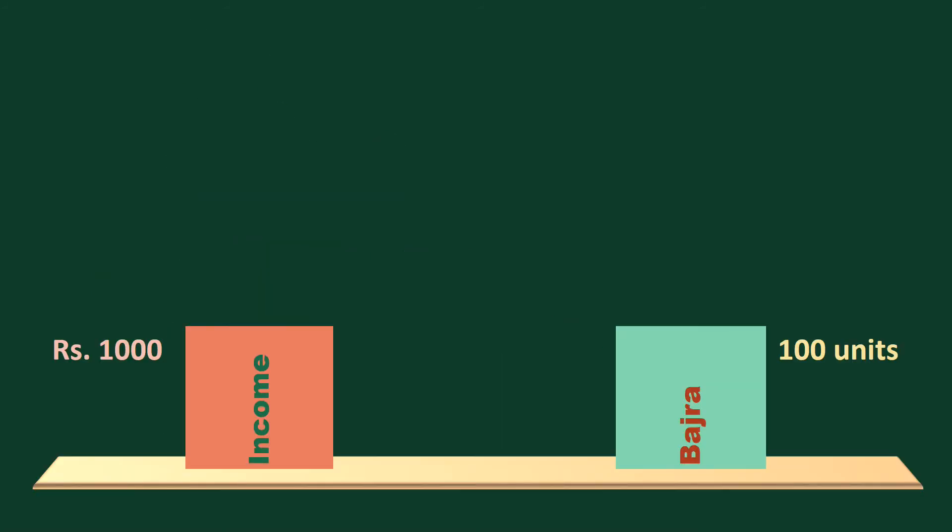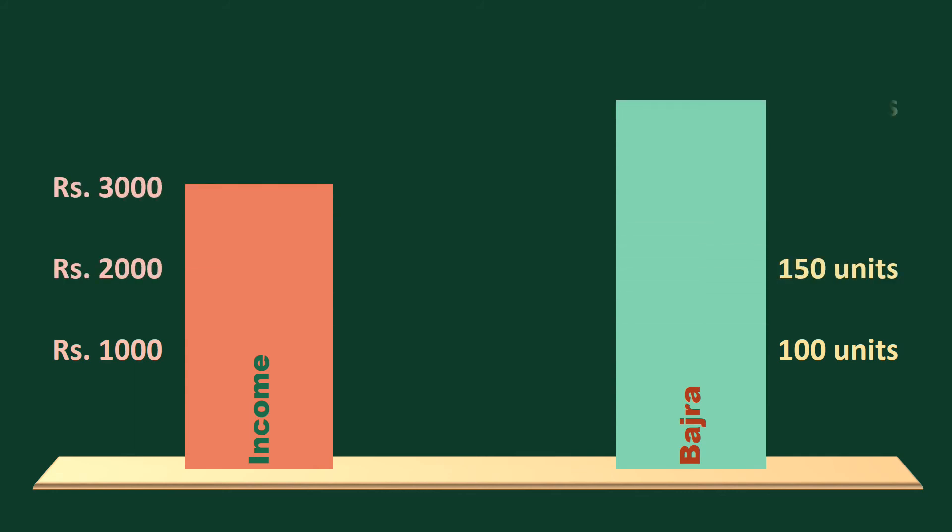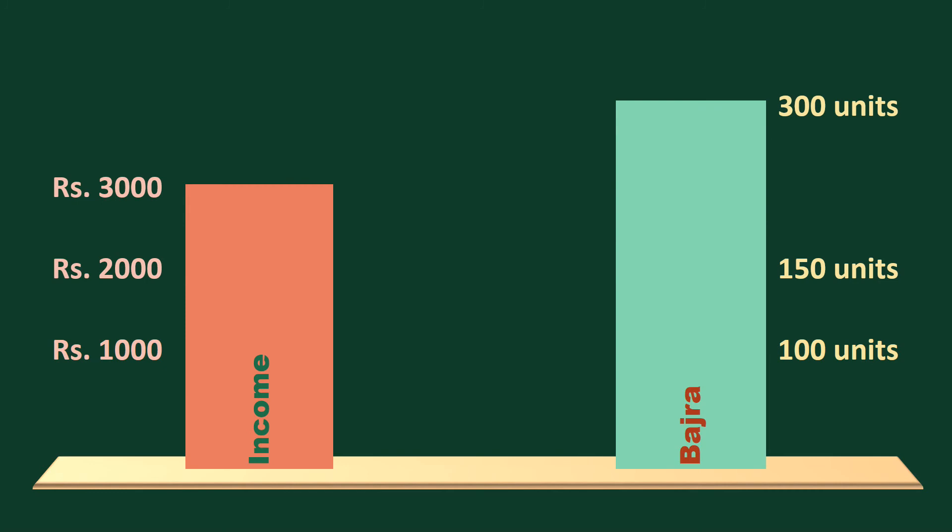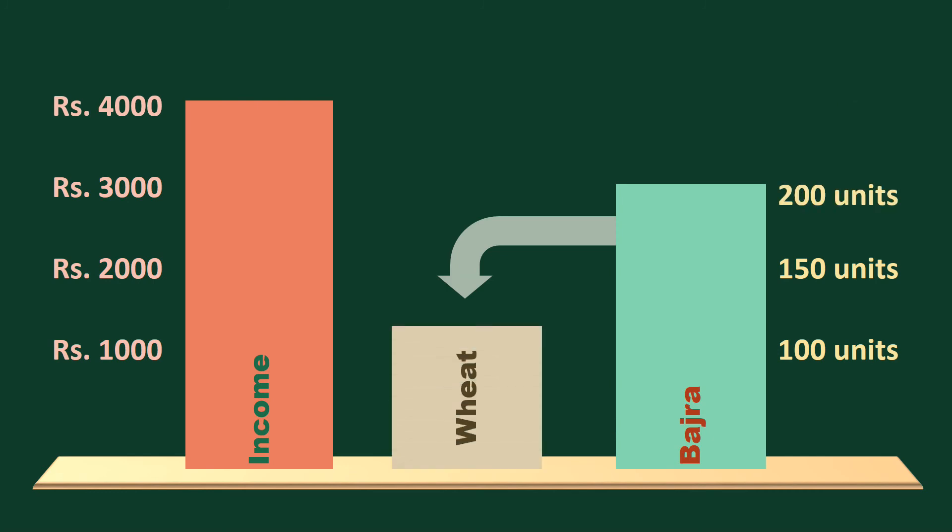Here, I must give an example. At a very low level of income, poor people consume bhajra. In the early stage, they buy more bhajra with every increase in income. But once their income crosses a certain limit, they switch to wheat, which in their view is superior to bhajra. They divert more money from bhajra to wheat. Naturally, they buy less bhajra as their income increases. Bhajra becomes an inferior good. This doesn't mean bhajra is an inferior good in absolute terms.